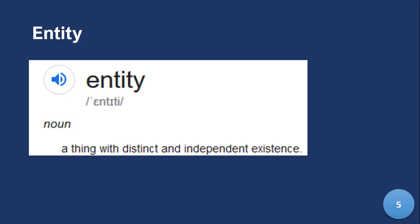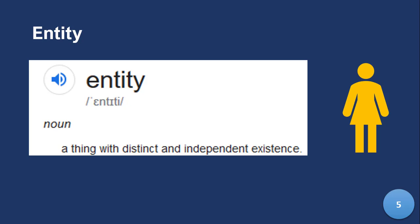An entity is a thing with a distinct and independent existence. It is deeper than what I'm going to say now, but just understand it can be anything — it has a distinct and independent existence. What makes it different from the other? So a ball is an entity, a house is an entity. The lady here is an entity.